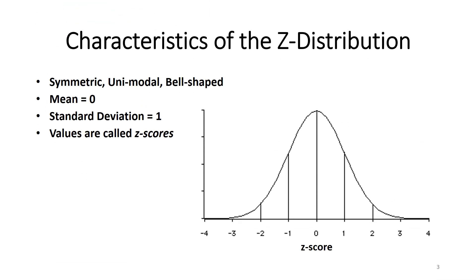So what are the characteristics of this standard normal curve, the Z distribution? As you can see from the graphic on this slide, the Z distribution looks like a normal distribution. In fact, it is a normal distribution, but it is the standardized normal distribution. By standardizing it, we fix the mean and the standard deviation values. Even though the Z distribution looks like any other normal distribution, it is unique because it is the standard normal distribution.